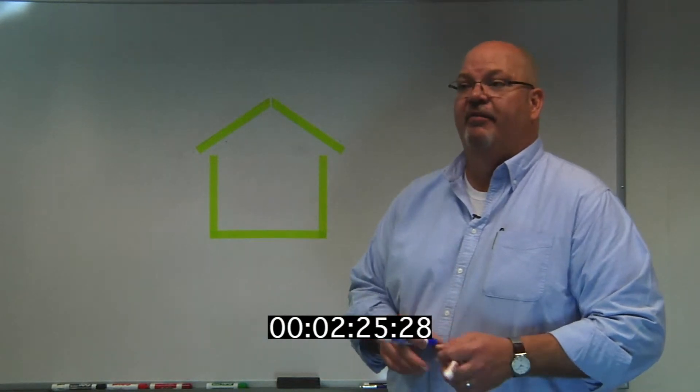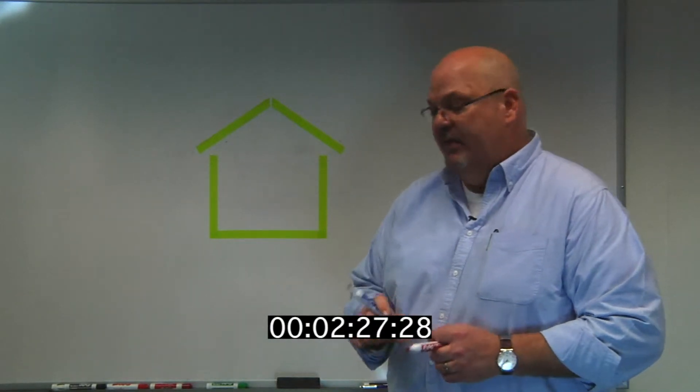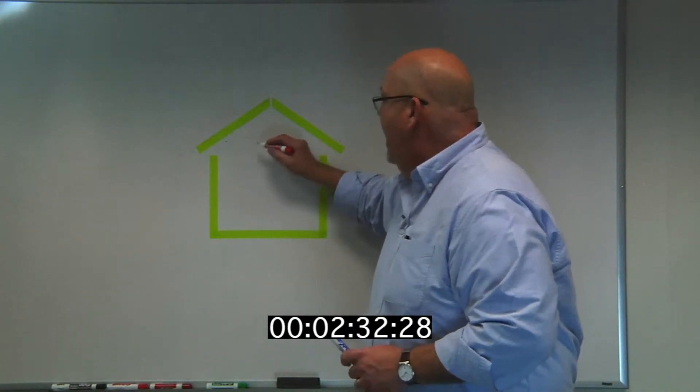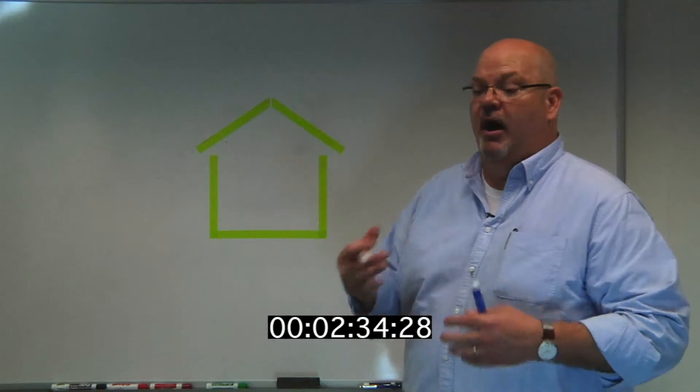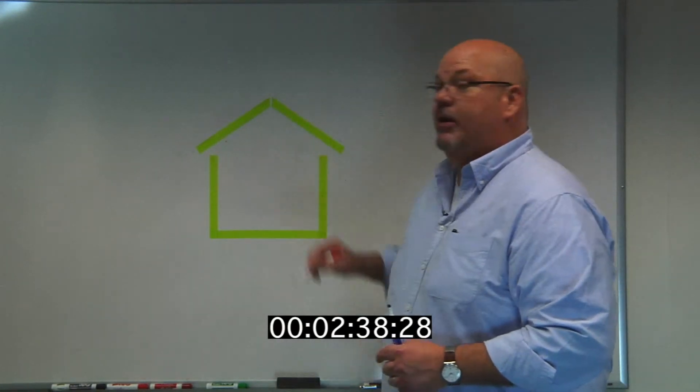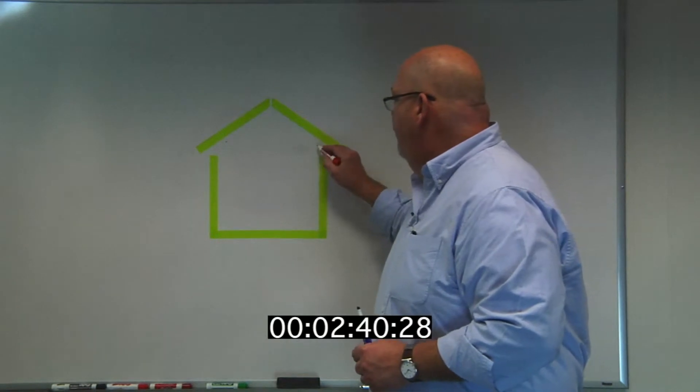In the stack effect, we all know that warm air rises like a hot air balloon. As the attic becomes heated by the sun striking the roof, it heats up the air on the underside of the roof deck, and this warm air then wants to migrate up and out the first hole it can find.